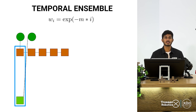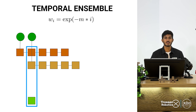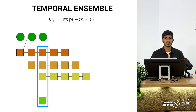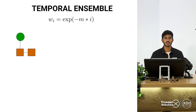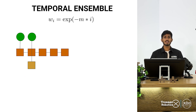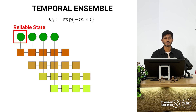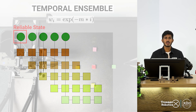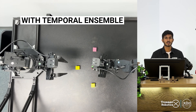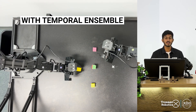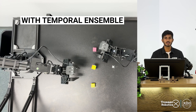When using temporal ensemble, the policy predicts the next k actions at each time step. The temporal ensemble then aggregates these actions using a given formula. This formula prioritizes the oldest action, as it has the highest probability of getting us back to the required trajectory. The oldest action is favored because it was generated from a state within the distribution, making it more reliable.